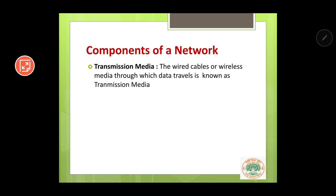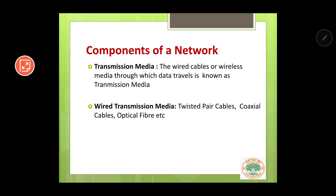The wired cables or wireless media through which data travels is known as transmission media. Some examples of wired transmission media are twisted pair cables, coaxial cables, and fiber optic cables. I will not go into the details of these because they are a bit advanced and you will get them in class 12.